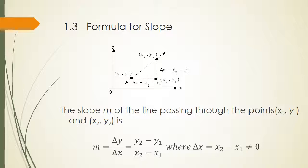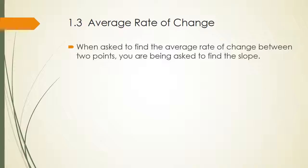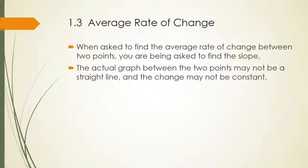When talking about lines, we need to discuss slope. The slope m of the line passing through points (x1, y1) and (x2, y2) is delta y over delta x — the change in y divided by the change in x — where y2 minus y1 over x2 minus x1. The change in x must not equal zero. When asked to find the average rate of change between two points, you're really being asked to find the slope between those two points.